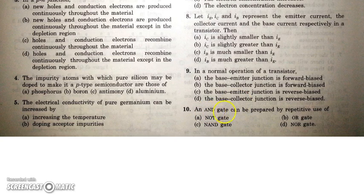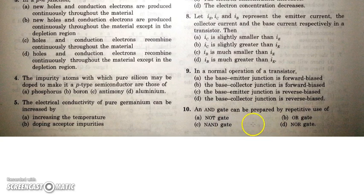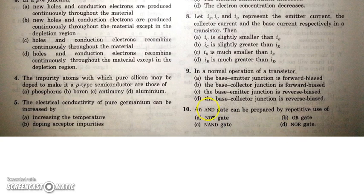In the next question, an AND gate can be prepared by repetitive use of NAND and NOR gates — both are universal gates. By repeating NAND or NOR gates, any logic gate can be produced. So by repeating NAND or NOR, you can obtain the AND gate.